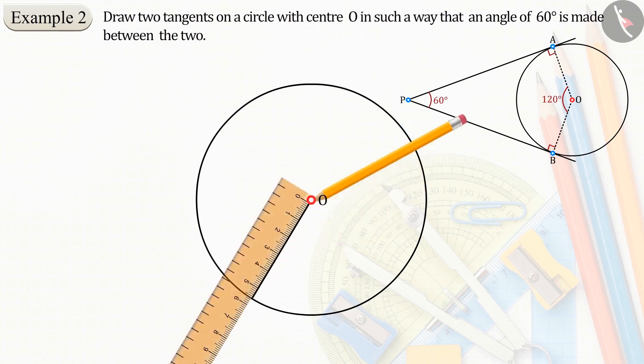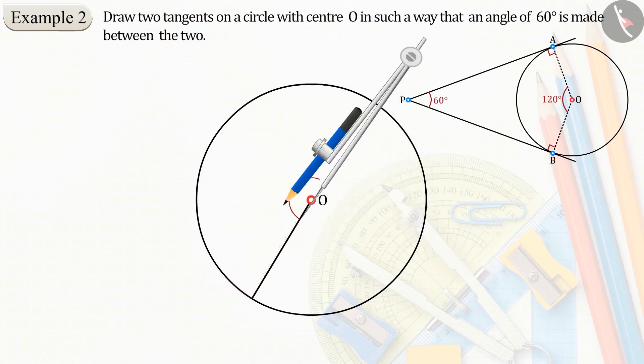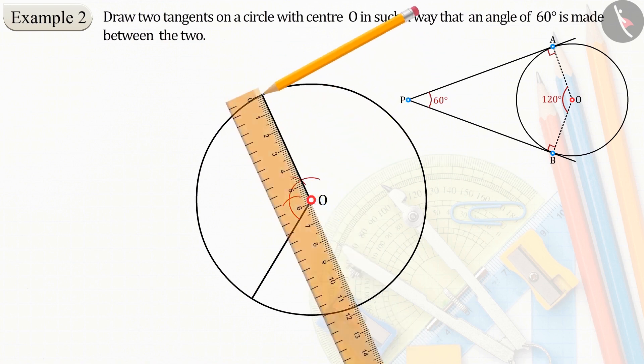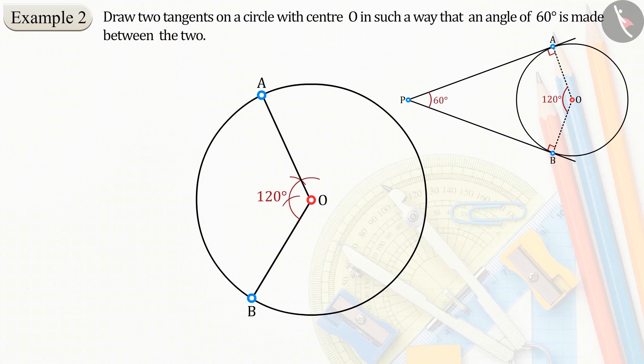Now draw two radii, OA and OB, making an angle of 120 degrees. Now the tangent lines passing through these two points A and B have to be drawn.